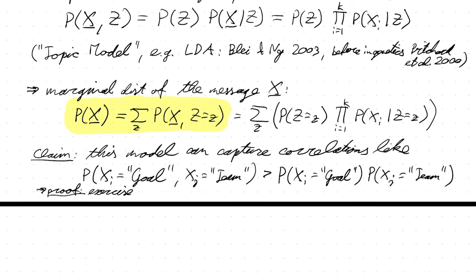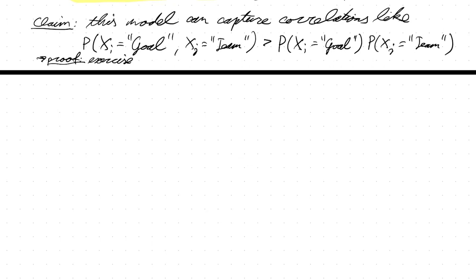We've now seen two classes of models that can capture correlations: autoregressive models (which we've used for compression) and latent variable models. However, it's not obvious how to use a latent variable model for compression. The problem is that the probability distribution of the data P(x) — the only thing we need for compression — is only implicitly defined through this marginalization, making it a complex expression. How do you actually use this for compression? That will be the topic of the rest of this video.